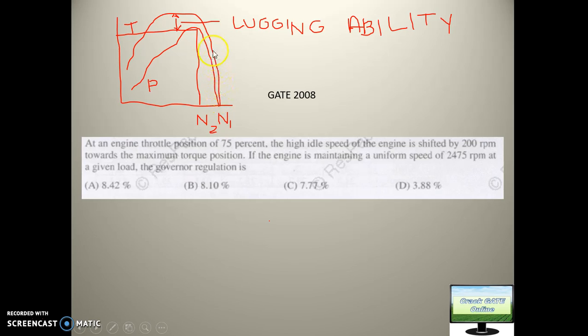And this is the torque curve. Torque will also reach a peak value, but that value will be at a lesser RPM than rated RPM. So peak torque will come somewhere here. If you draw a horizontal line from the maximum power point, this excess torque you are getting here is called lugging ability.